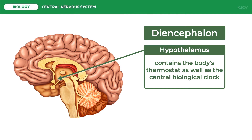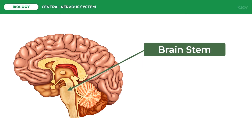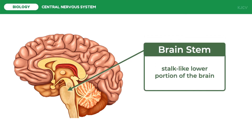The hypothalamus is also the source of posterior pituitary hormones and of releasing hormones that act on the anterior pituitary. The brain stem is the stalk-like lower portion of the brain and serves as a vital link between the spinal cord and higher brain regions.